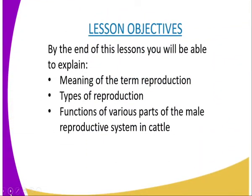On to the lesson objectives. By the end of this lesson, you should be able to: number 1, state the meaning of the term Reproduction; number 2, state the types of Reproduction; and number 3, state the function of various parts of the male reproductive system, especially in cattle.